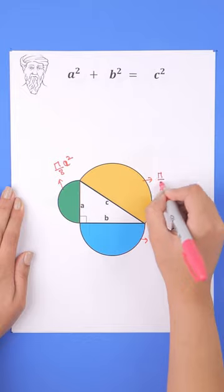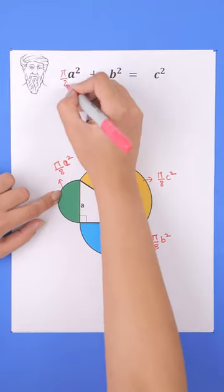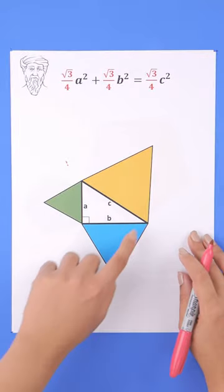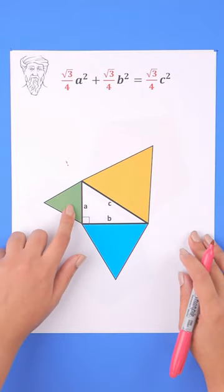Likewise, the areas of this equilateral triangle plus this one equals this one.